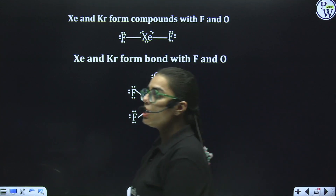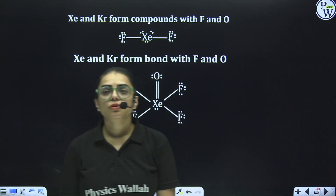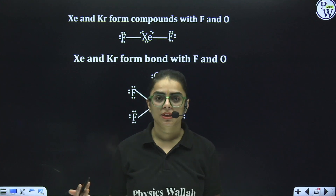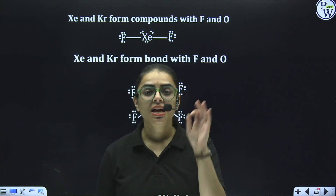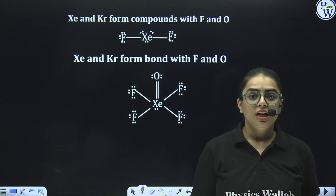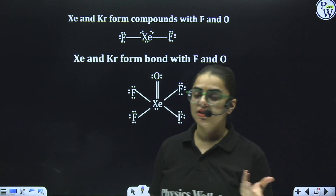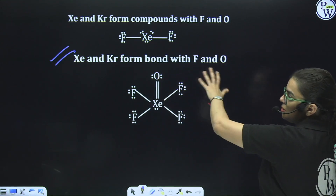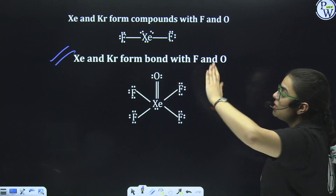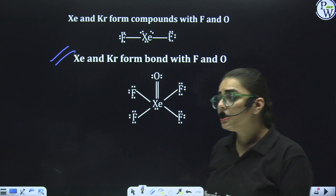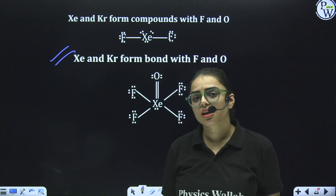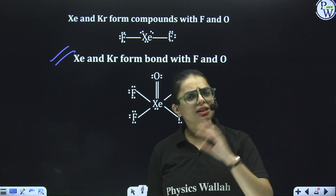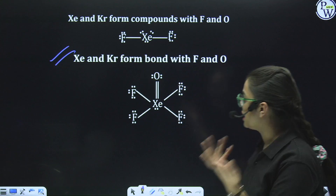One more exception: the octet rule stated that noble gases cannot create bonds with other elements. But there was an exception — compounds like XeOF₂ were created, and even compounds of krypton were made. So xenon and krypton can form bonds with fluorine and oxygen, which was an exception to the original octet rule.